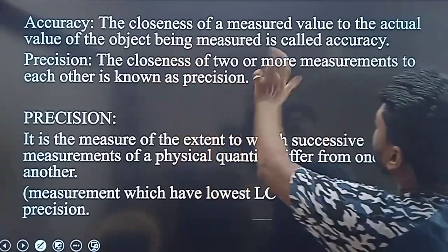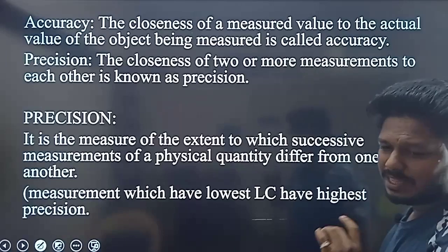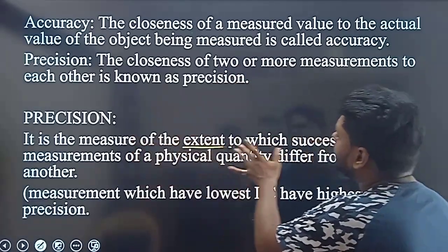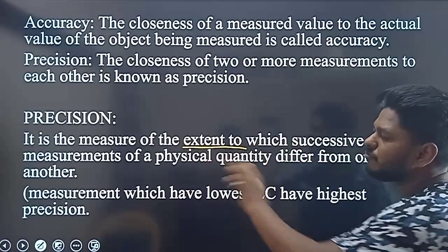Precision is the closeness of two or more measurements. In each reading, it is the single point of reading. Instead of the individual definition, it is the measure of extent.